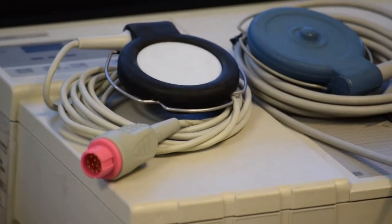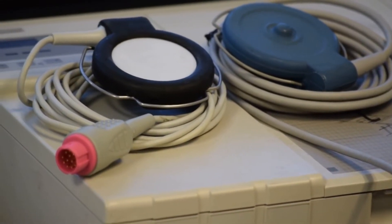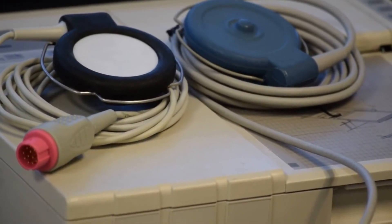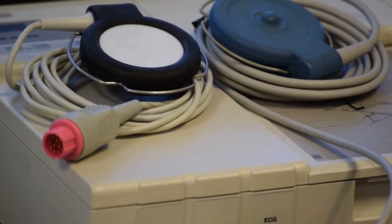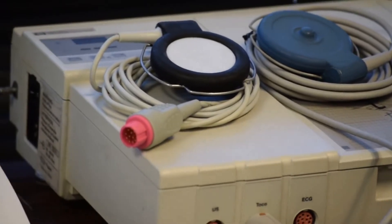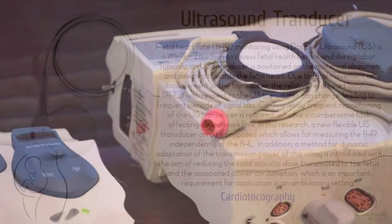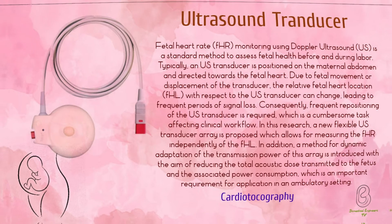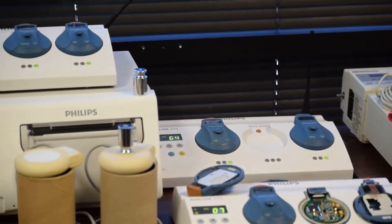Let's look into ultrasound transducers in CTG machines. Cardiotocography uses ultrasound to detect the baby's heart rate. Ultrasound travels freely through fluid and soft tissues, but is reflected back as echoes when it hits a more solid, dense surface. For example, ultrasound will travel freely through blood in a heart chamber, but when it hits a solid valve, a lot of the ultrasound echoes back. Similarly, when ultrasound travels through bile in the gallbladder, it will echo back strongly if it hits a solid gallstone.